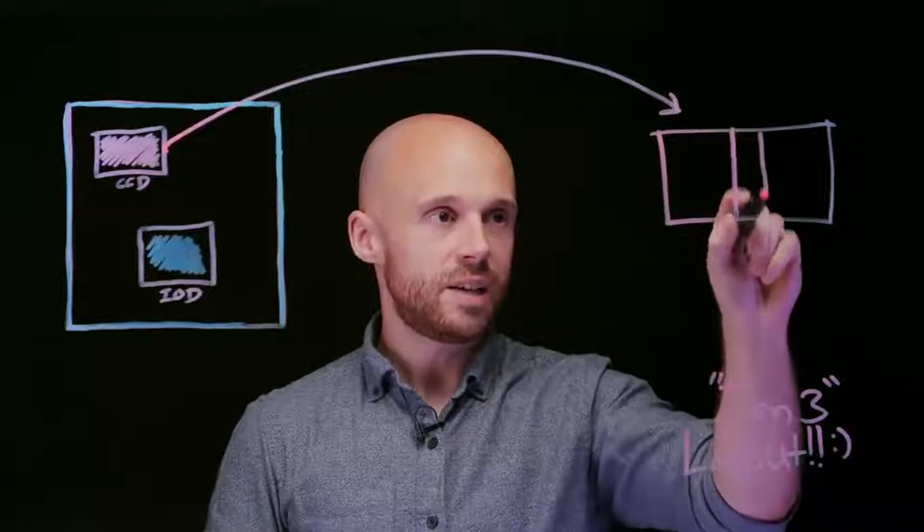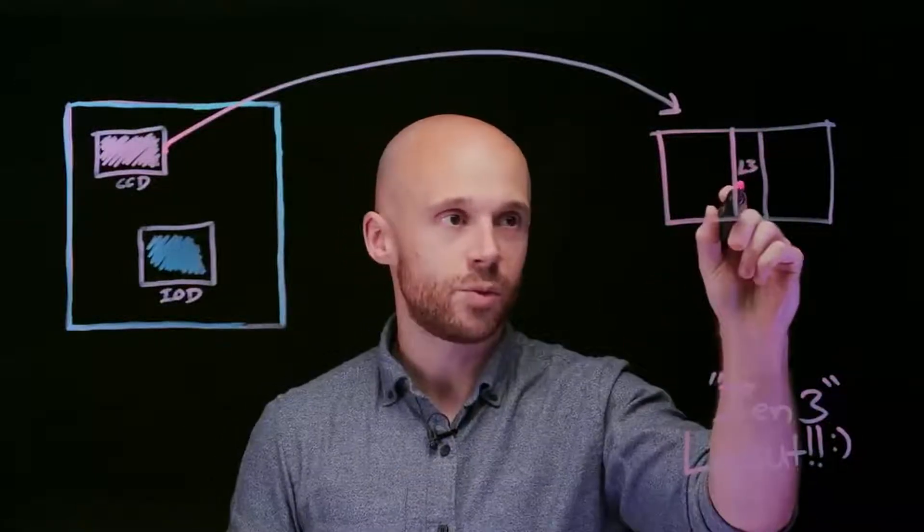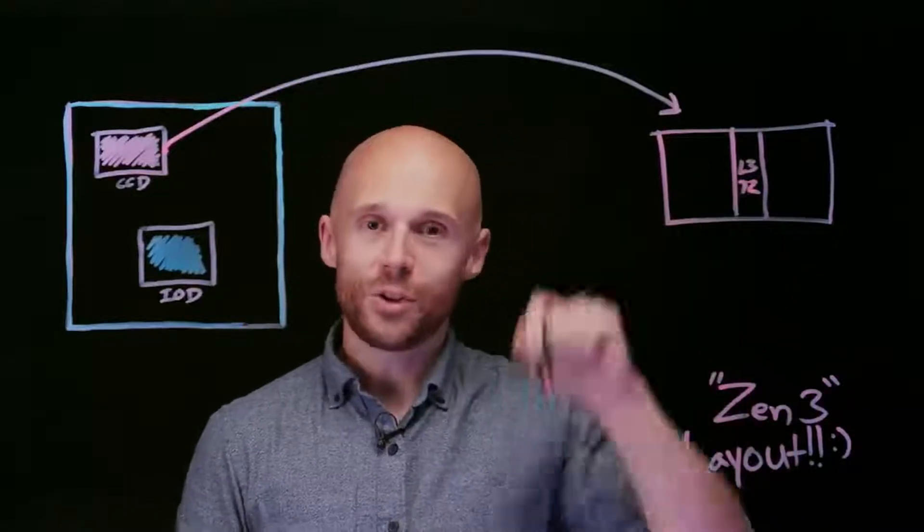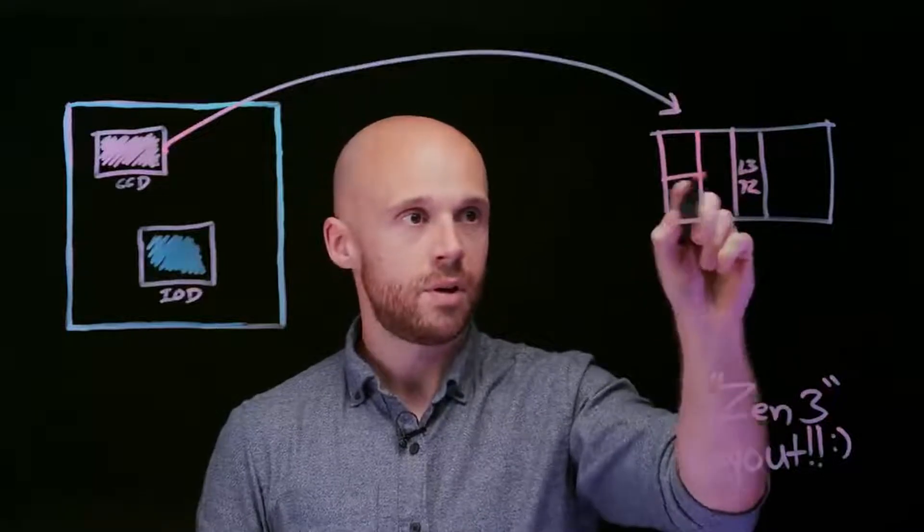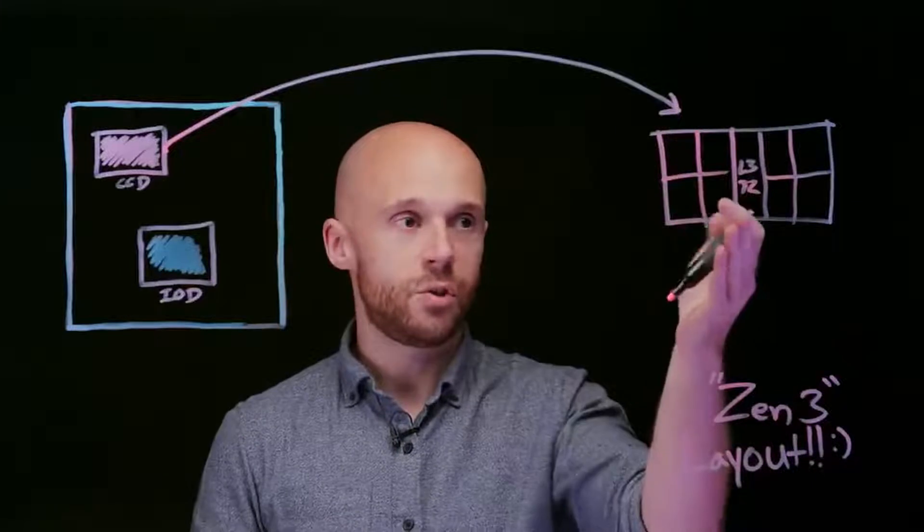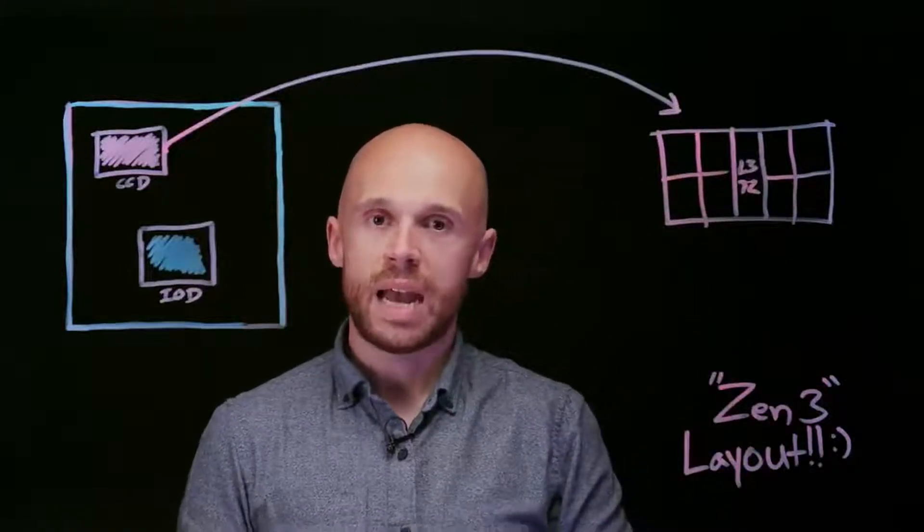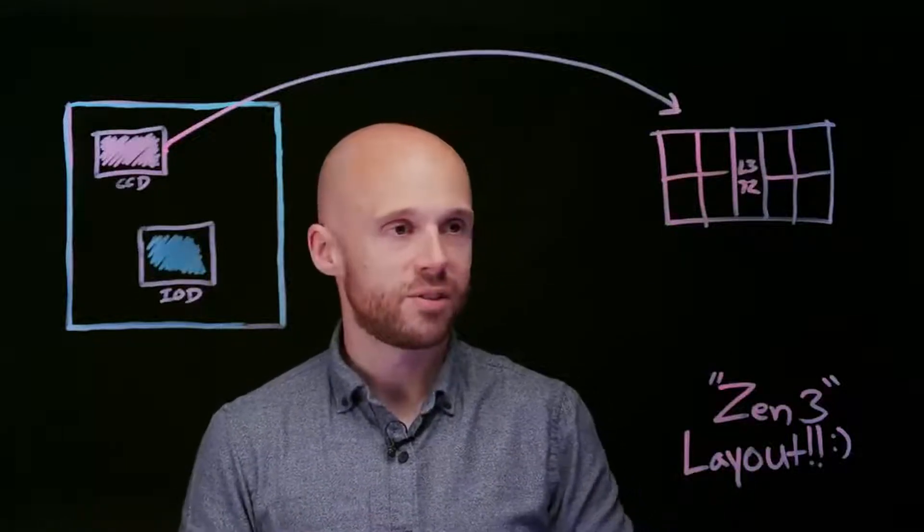And what you'll find in the middle is L3 cache. There's 32 megs, so we'll just put a little 32s. Hard to write small with a marker like this, but 32 megs of L3 cache. And then also, four cores on each side. So you've got 32 megs of L3 cache and eight total CPU cores. And that is how we are laid out today in a Zen 2 microprocessor.